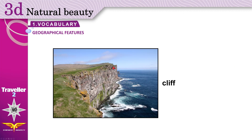Cliff: a large area of rock or a mountain with a very steep side. This side is steep — it's going straight down — often at the edge of the sea or a river. Cliff.